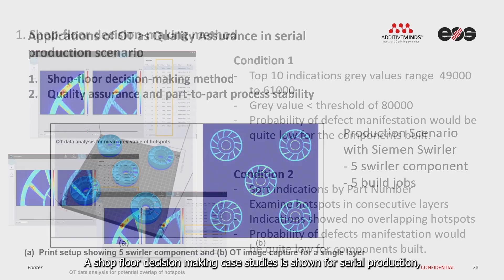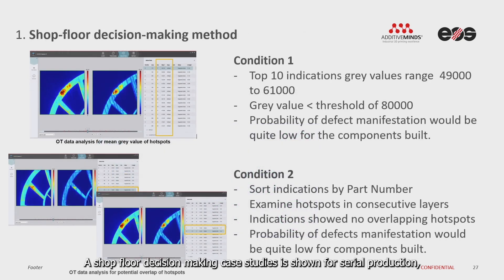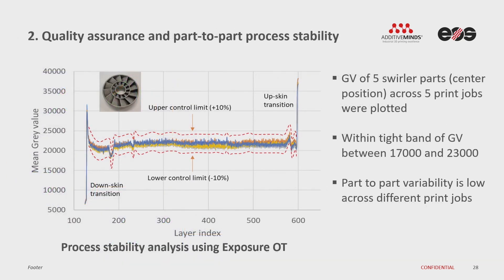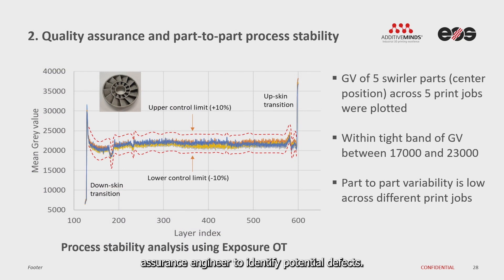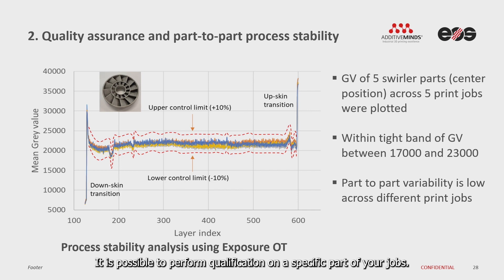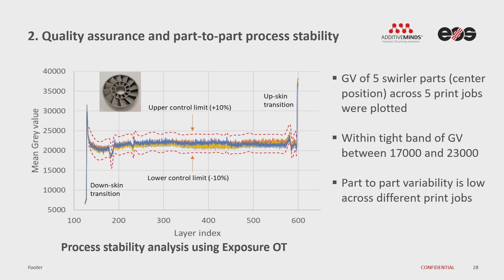In this section, a short floor decision-making case study is shown for serial production using the correlation methods developed. Using the correlation established for this industrial solar component, the Exposure OT software allows a quick way for a quality assurance engineer to identify potential defects. This can be achieved using the extreme hotspot gray value flagged by the analysis software and checking for the overlap of hotspots. It is possible to perform qualification on a specific part of build jobs. The unique OT intensity profile can then be used as a reference for future printed parts on the same system.